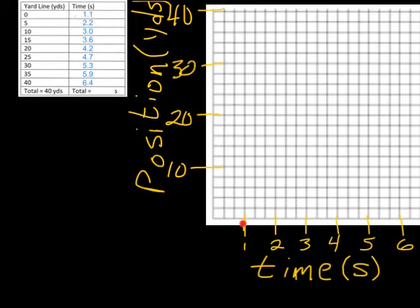So, the time is 1.1. So, 1.1 is just inside of 1. And, the yard line mark is 0. So, here's 0. And, so, I'm going to put a dot there. So, there's our first mark. Our second mark will be right here.